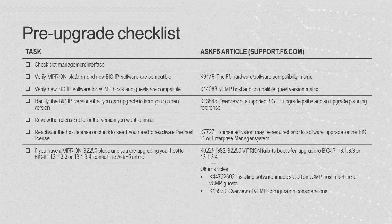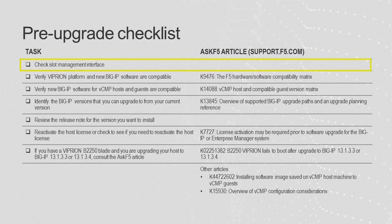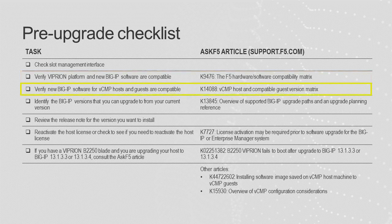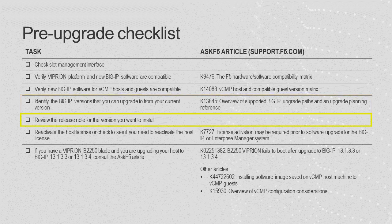Complete the following tasks before you start upgrading your Viprian systems. Verify that the management interface for each slot is physically wired to an external switch so that you can maintain connectivity to the management port if the primary blade designation changes during the update. Consult the Ask F5 article to ensure you upgrade to a BigIP version that is compatible with your Viprian platform. For VCMP systems, consult the article to ensure you upgrade your hosts and guests to compatible BigIP versions, and identify the BigIP versions you can upgrade to from your current version. Review the release notes for the version you want to install. F5 recommends that you reactivate the host's license before you upgrade; however, you can verify the service check date for the license to see if you need to reactivate it.